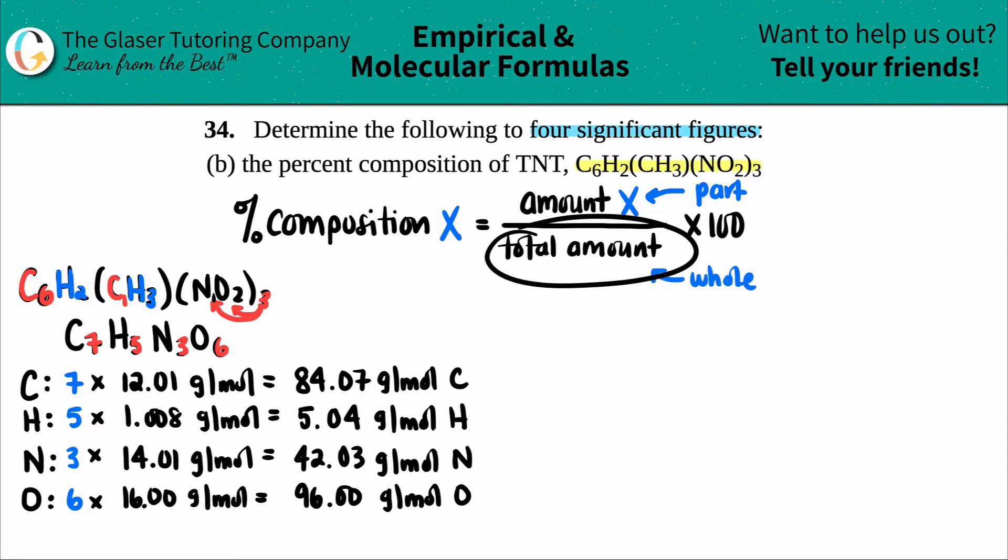Now, we still need to find the total amount. So just like any molar mass, you're going to add all of these values up. So I'm going to add up all these values, and that's my total molar mass for the entire compound of TNT. So 84.07 plus 5.04 plus 42.03 plus 96 is 227.14, and that's grams per mole of the entire compound. So that's the total number.